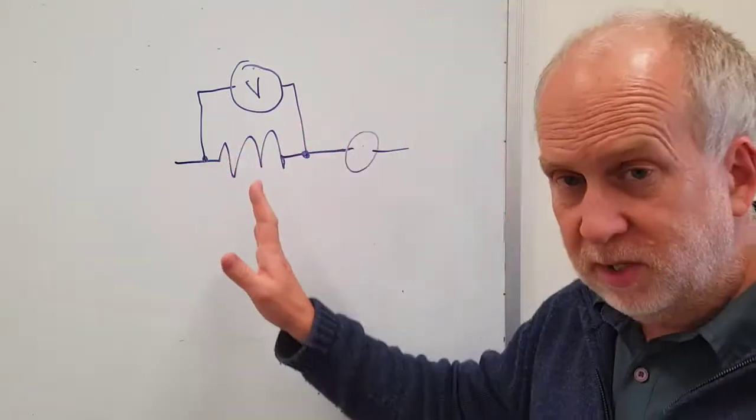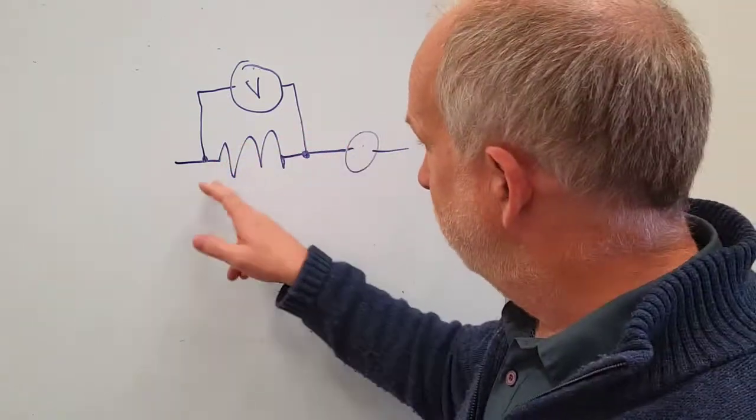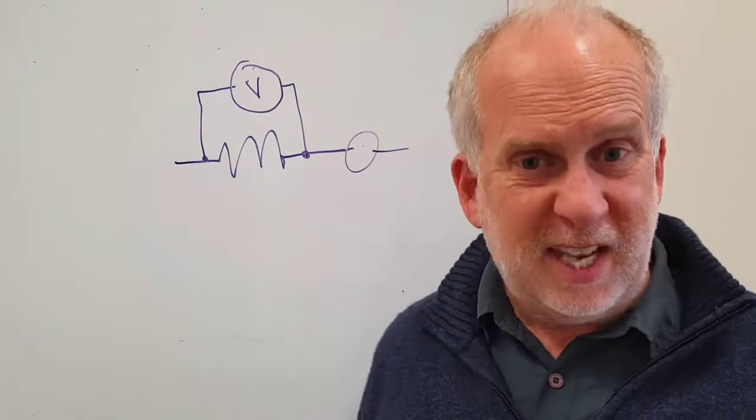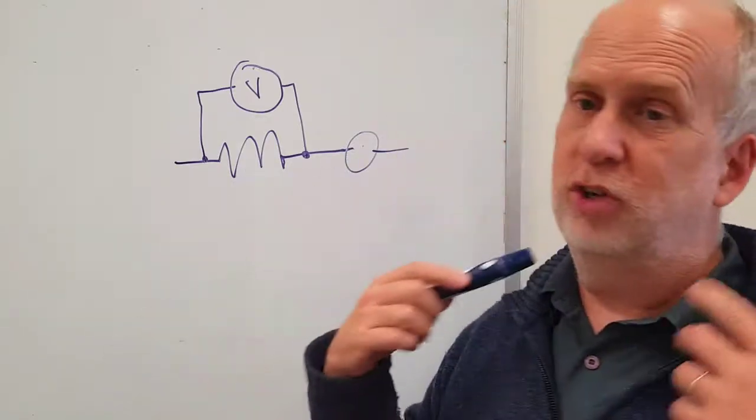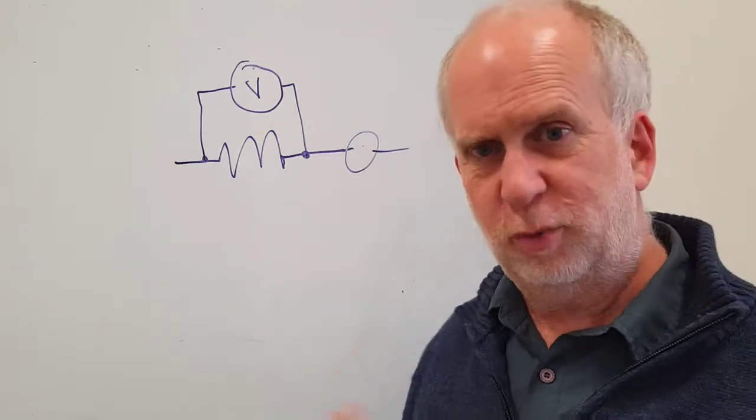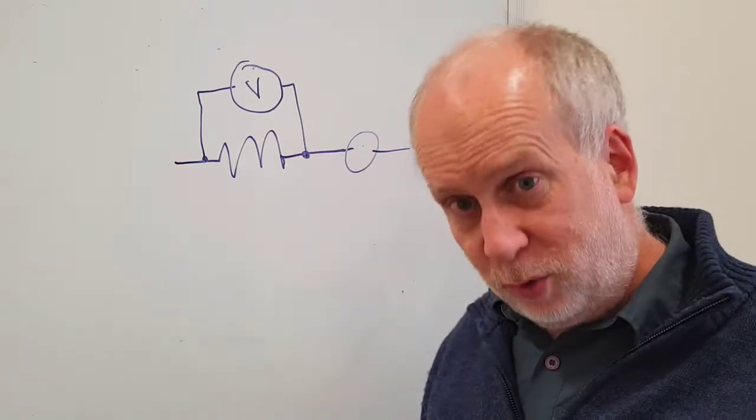An ideal voltmeter should measure the voltage without changing anything in the circuit. So it shouldn't change the current, shouldn't change the voltage, everything else should be the same. It's the same with all measuring apparatus. You want to be able to measure something without changing what you're measuring.